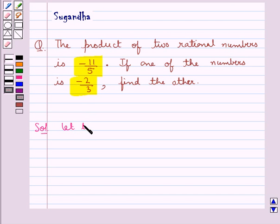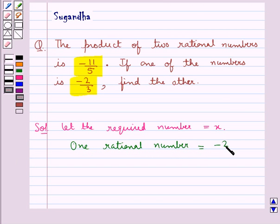Let the required number be equal to x and we are given that one rational number is equal to minus 2 upon 3.